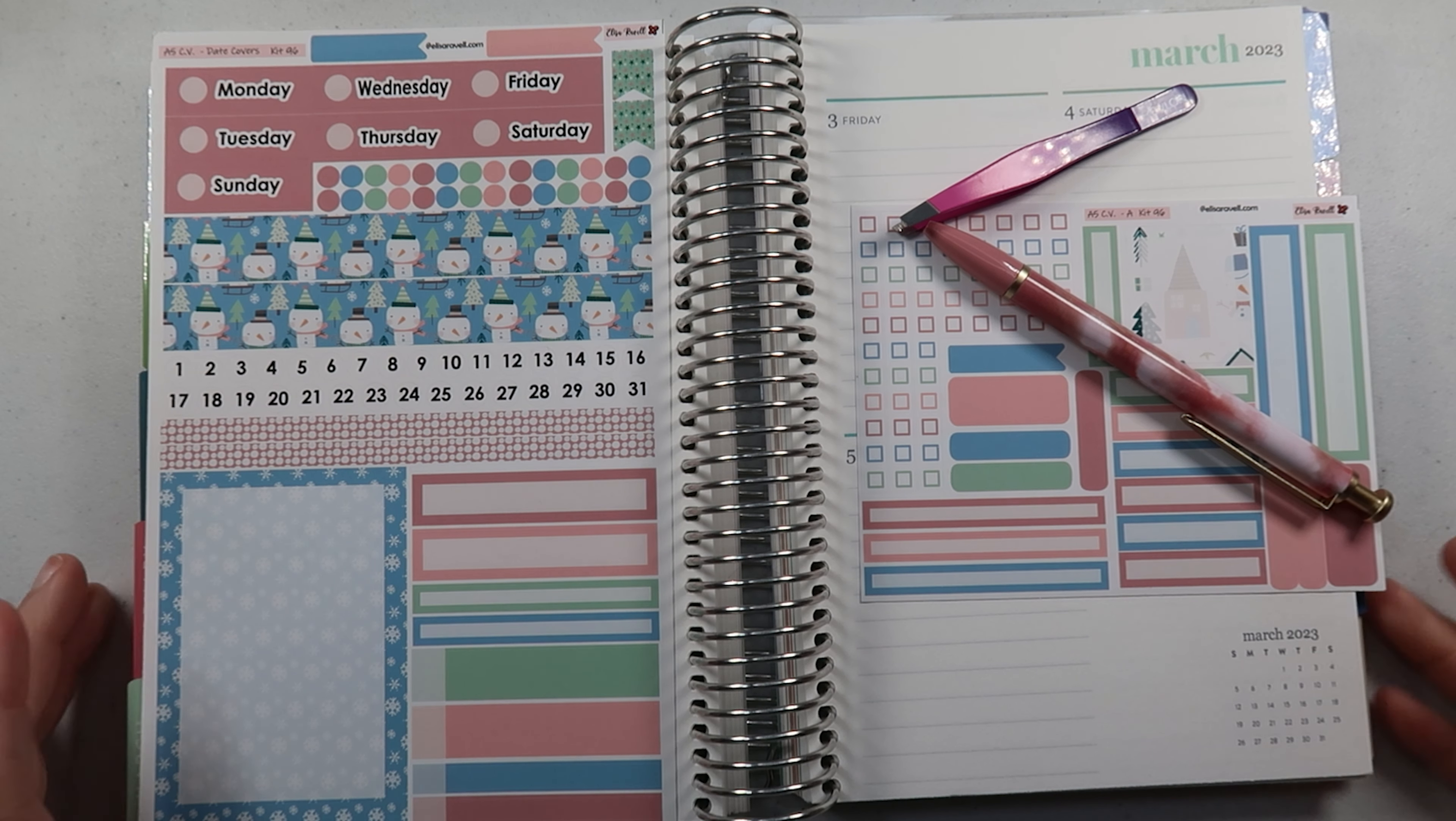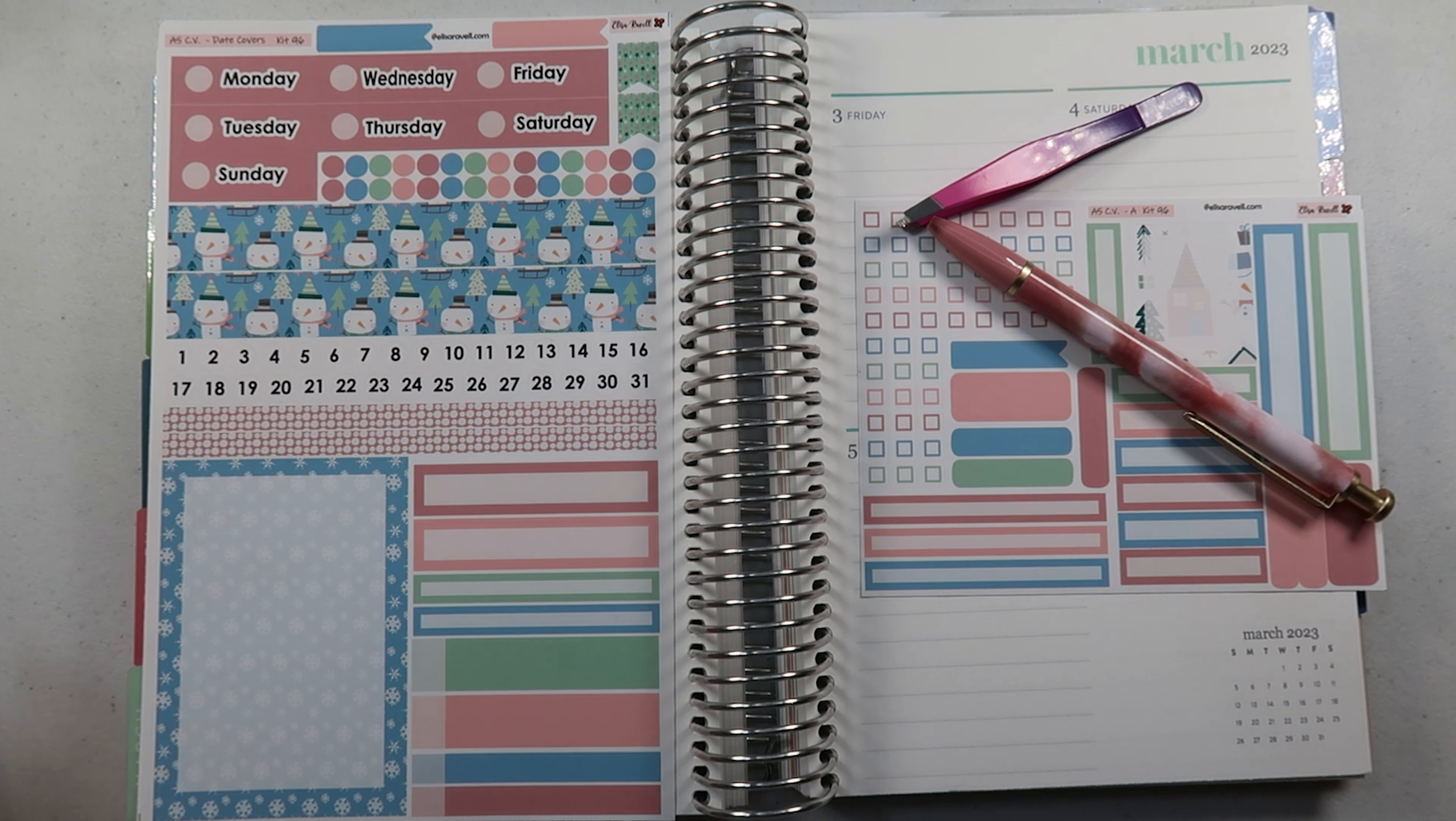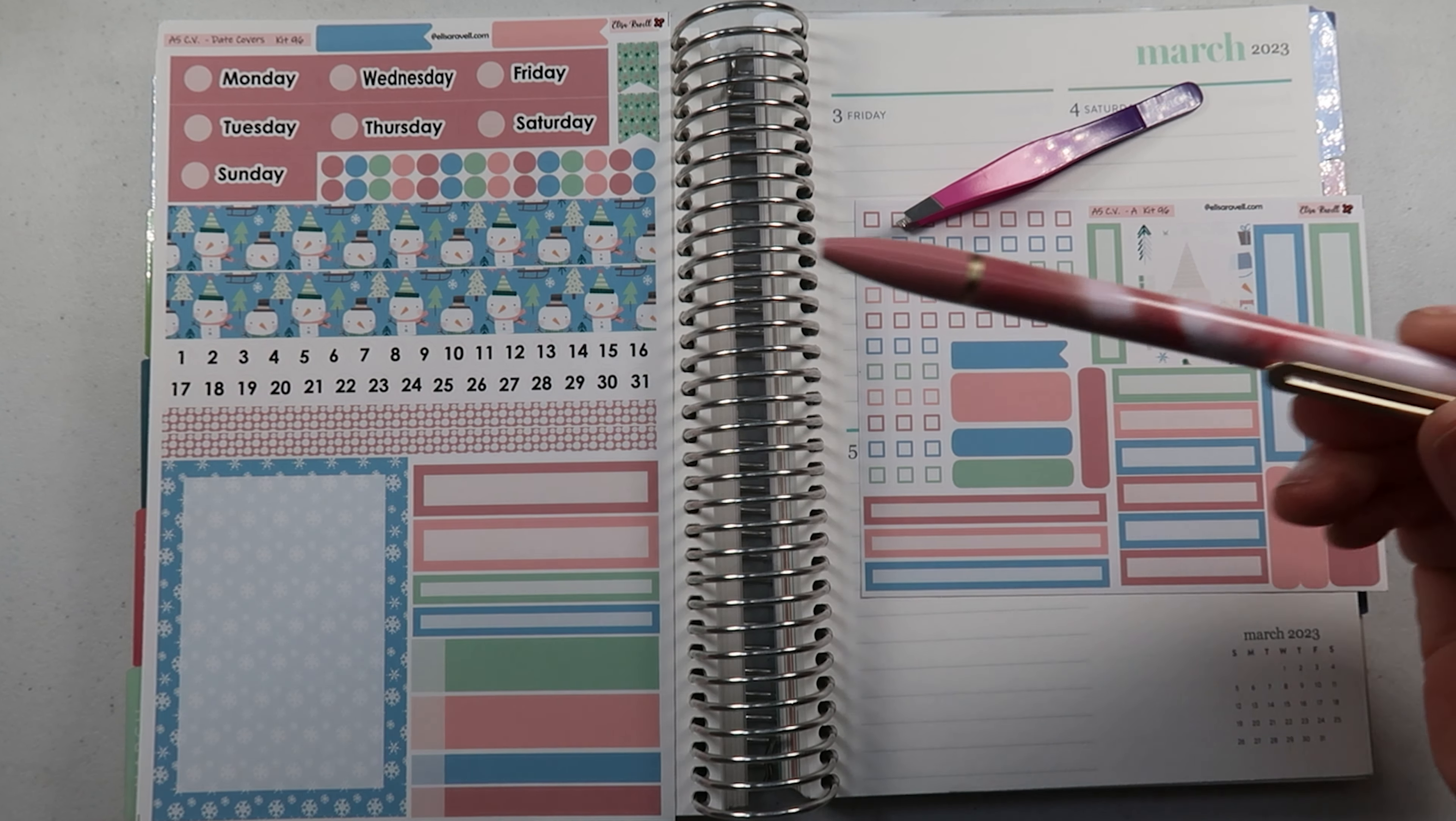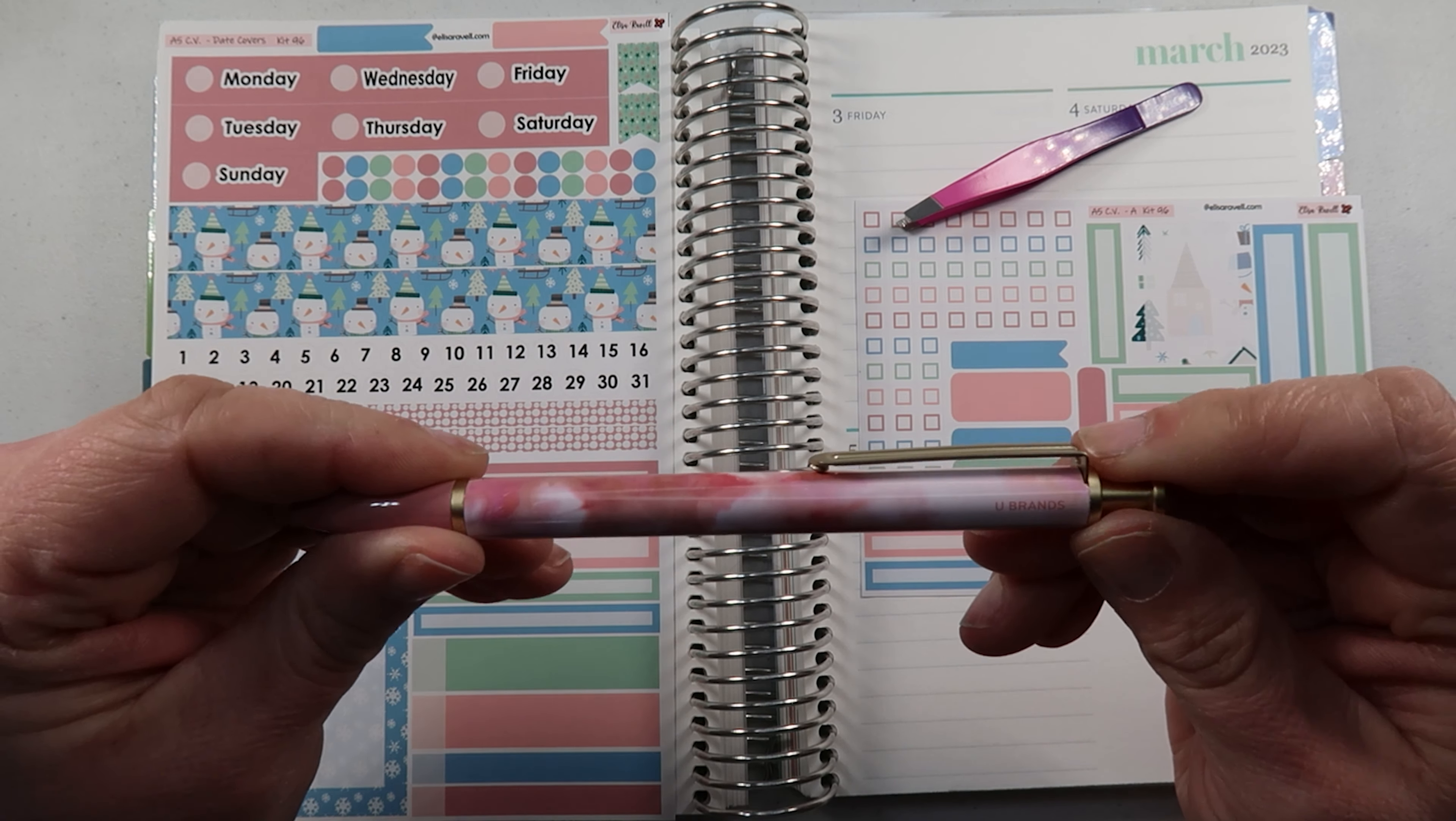Hey everybody, it's Rhiannon, welcome back to Mamma Replans, or welcome if you are new here. Today we are going to be doing a pre-plan with me in my Erin Condren compact vertical, and we are going to be using this gorgeous print from You Brands. This is from Target and I love it.